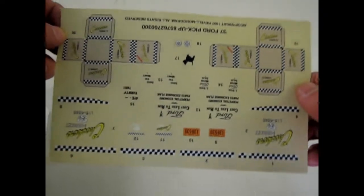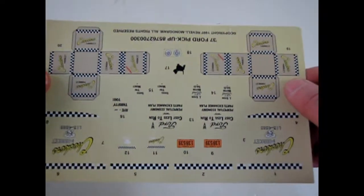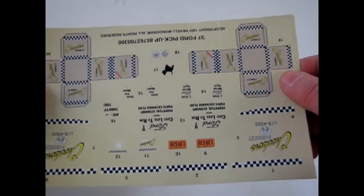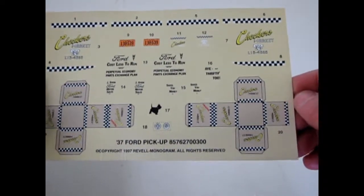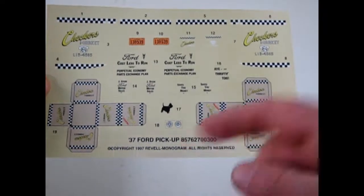So let's take a look at the decal sheet. There are two boxes for your checker. You can also photocopy these or color computer copy and print out a whole ton so you'd have stacks and stacks of those boxes in your pickup truck bed.